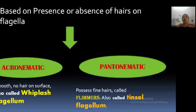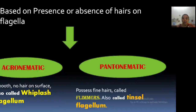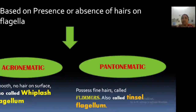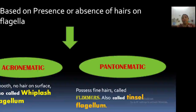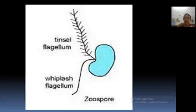Based on the presence or absence of hairs on flagella, you can classify them into two groups. Some flagella are smooth; some flagella have hairs. These two groups are called acronematic and pantonomatic — otherwise called whiplash and tinsel flagella. Acronematic means very smooth, no hair on the surface — otherwise called whiplash flagella. Pantonomatic means the flagella has hairs on its surface, and those hairs are called flimmers. In the textbook it is written as whiplash and tinsel.